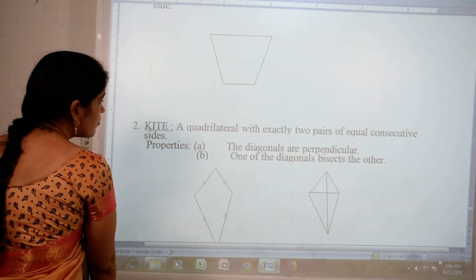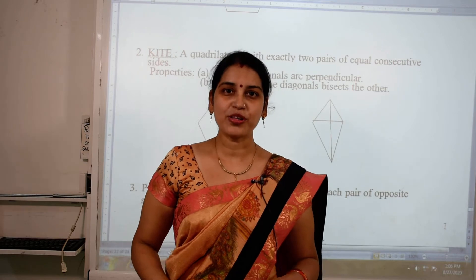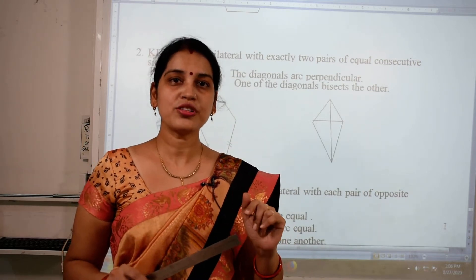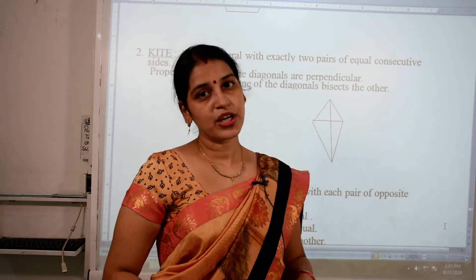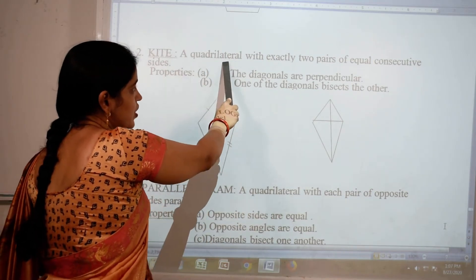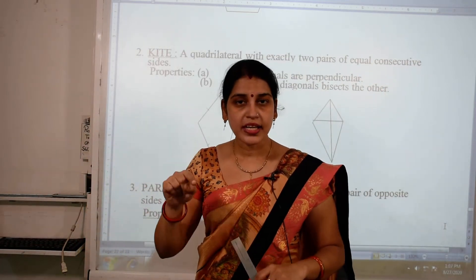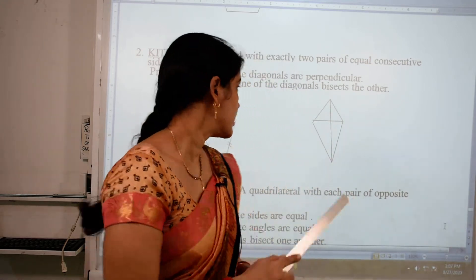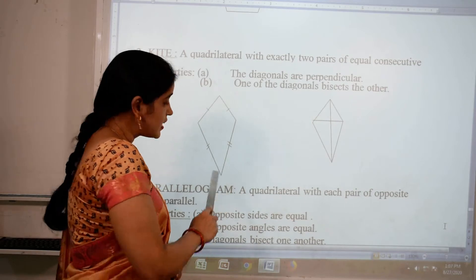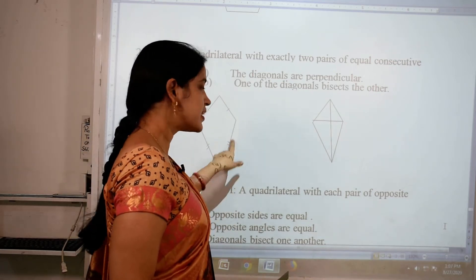Now the second type of quadrilateral is kite. You have heard the name of kite and you have flown one too, so you are aware about it. Here also we have the figure of kite, made by four line segments. A kite is a quadrilateral with exactly two pairs of equal consecutive sides. In kite, two consecutive sides are always equal.